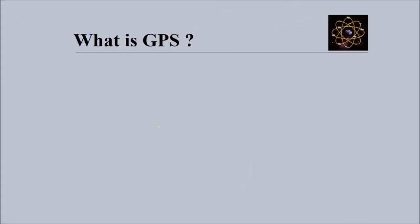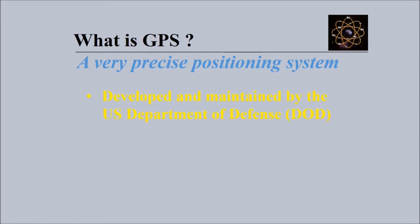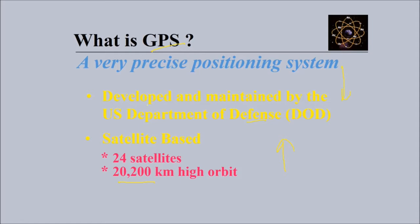Global Positioning System - what is GPS? GPS in a nutshell is a very precise positioning system developed and maintained by the US Department of Defense. What we're talking about is NAVSTAR GPS. 24 satellites are in orbit around the earth at an elevation of 20,000 kilometers.